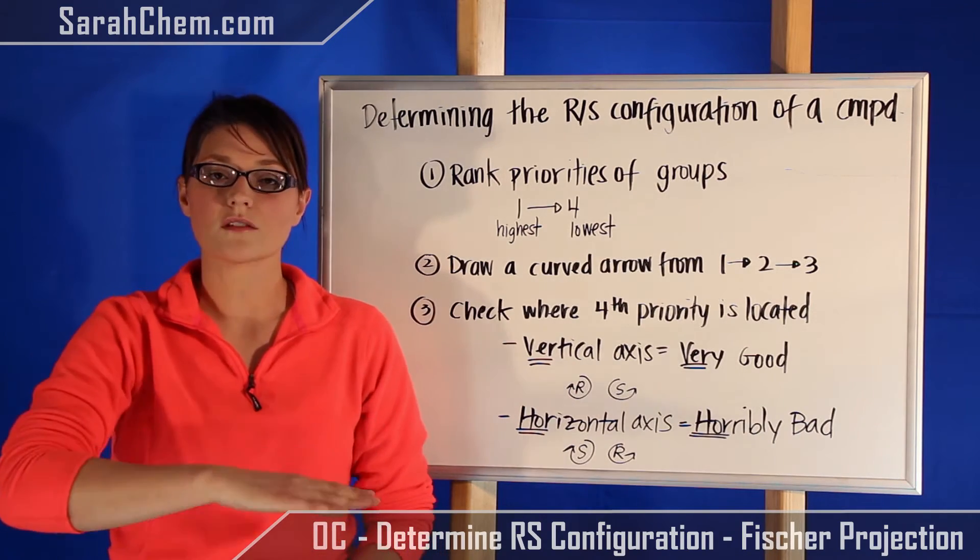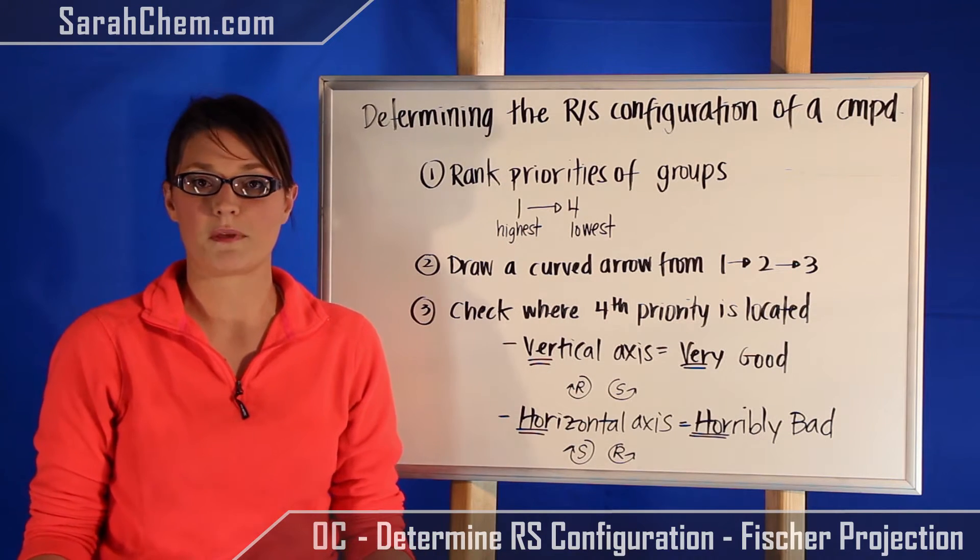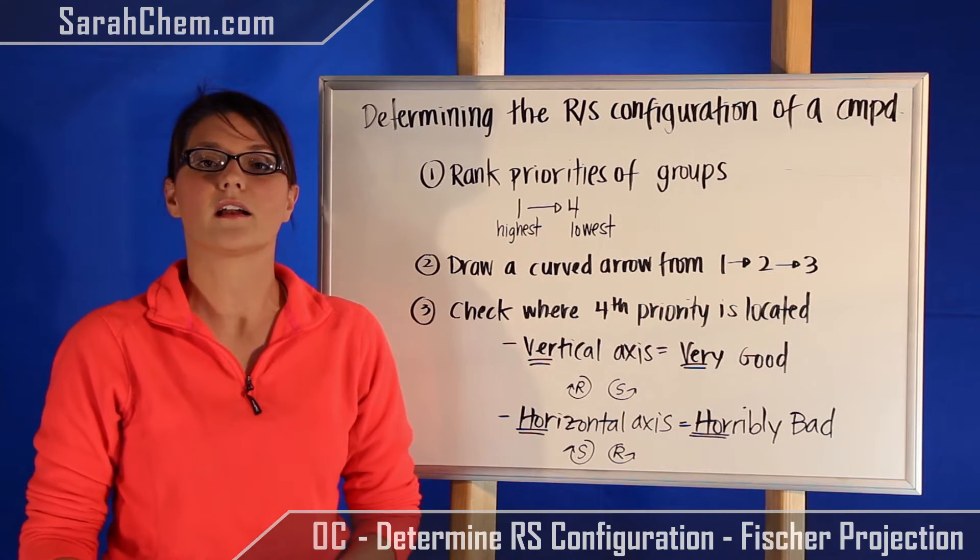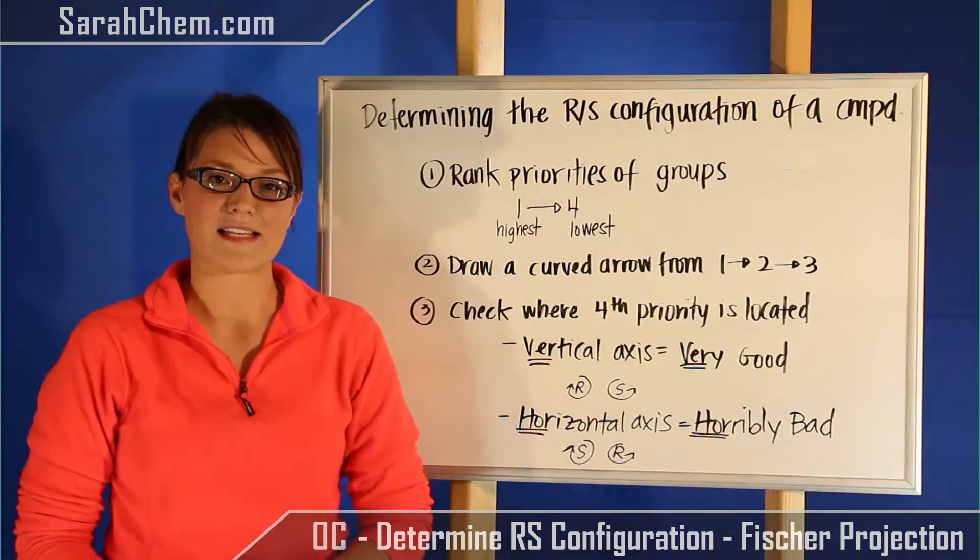Alternatively, you could be in the horizontal stance and horizontal is horribly bad, meaning it's the opposite of what you think it should be. So now when we have a counterclockwise, that is R and clockwise is S. So these are the rules. You just got to play by them. Let's take a look at an example.